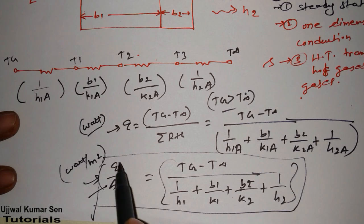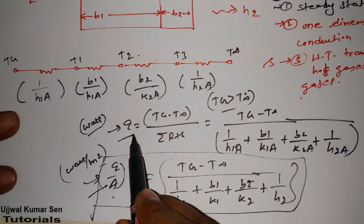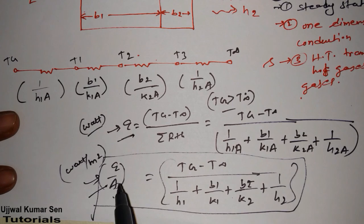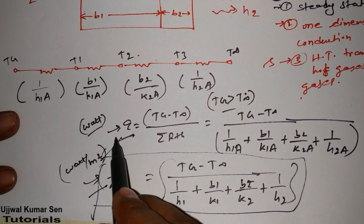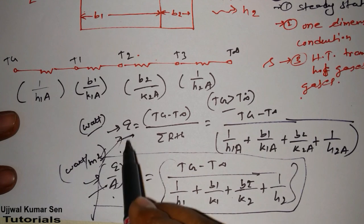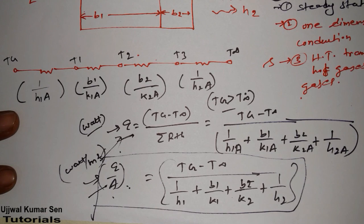So we have two formulas: one for heat transfer rate and one for heat transfer rate per unit area. The difference lies in the units and the wording in the question. Thanks for watching — see you soon in my next video.